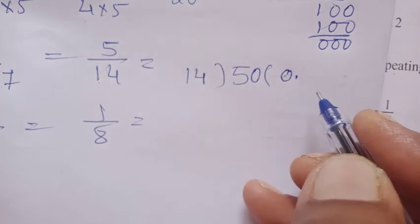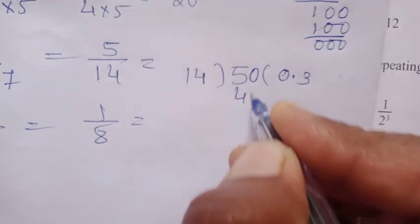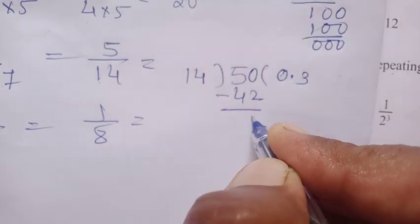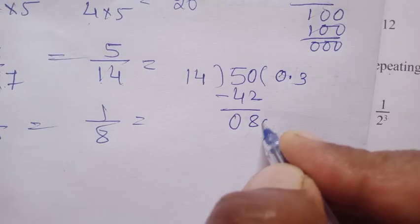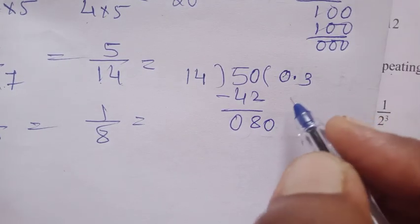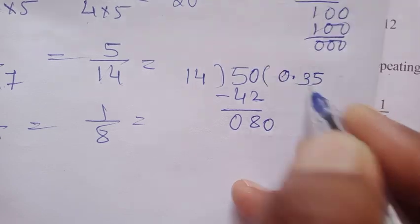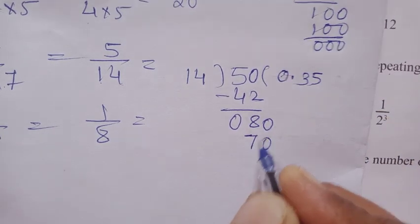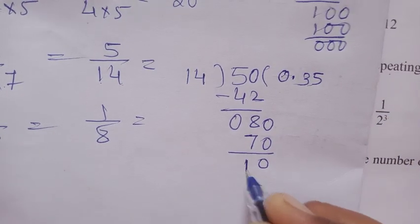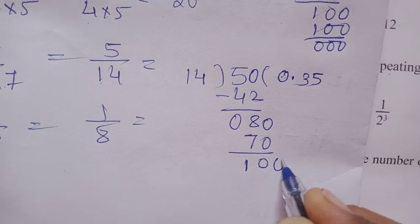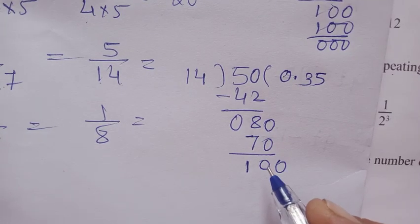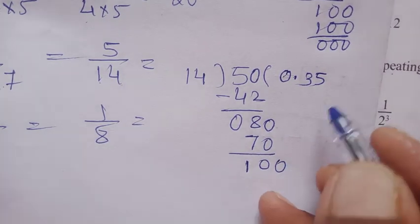Simple subtraction: 50 minus 42 is 8. Take one more 0, it becomes 80. 14 times 5 is 70. We get 70, and 80 minus 70 is 10. Take one more 0, it becomes 100. 14 times 7...